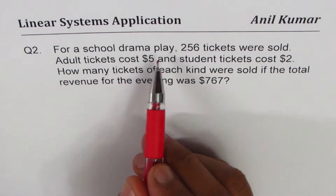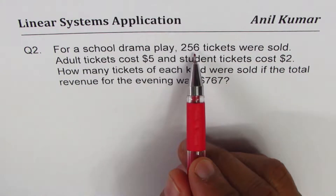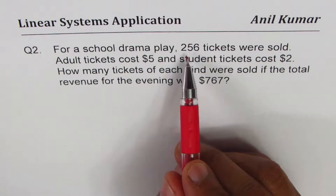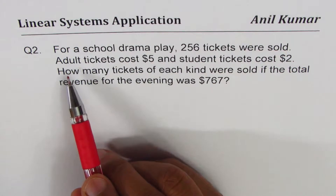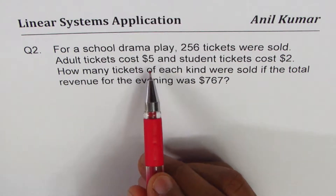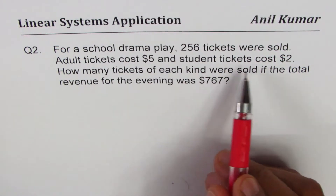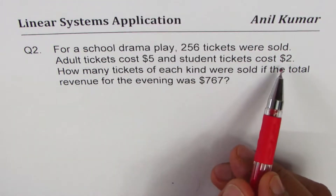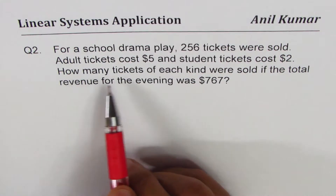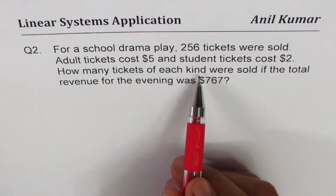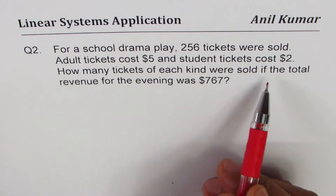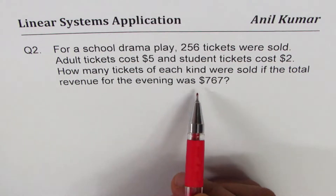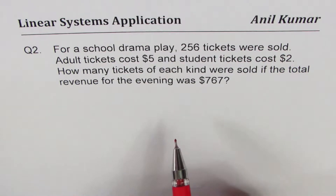It says, for a school drama play, 256 tickets were sold — that's the total number of tickets sold: 256. Adult tickets cost $5 and student tickets cost $2. There are two types of tickets: one for adults, the other for students. How many tickets of each kind were sold if the total revenue for the evening was $767?